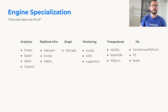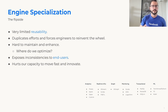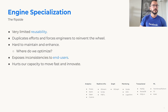This is just a subset of some of the engines available and some of the engines used inside Meta, just to illustrate, but there are many more. Even though there's some similarity between those engines, reusability is still very limited. It duplicates efforts and forces engineers to reinvent the wheel. It's also hard to maintain and enhance — hard to choose which engines you add new features to and which you optimize. It also exposes inconsistencies between engines to end users, who usually need to interact with many different engines to achieve a particular task. Ultimately, it hurts our capacity to move fast and to innovate.